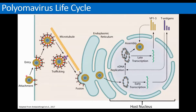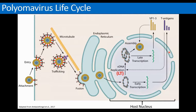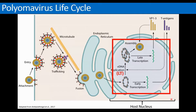The virus first attaches to receptors on the cell membrane, triggering endocytosis. It traffics along microtubules to the endoplasmic reticulum, where it is partially dismantled by ER-resident proteins. The viral genome is then trafficked to the host nucleus. The viral T antigen proteins are expressed first — one of these, called large T or LT, is translocated to the nucleus and directs viral DNA replication. When replication is underway, the structural proteins begin to be expressed and also translocate to the nucleus where viral assembly takes place. Eventually the nucleus fills up with virus, the cell lyses, and progeny virus is released to infect other cells.